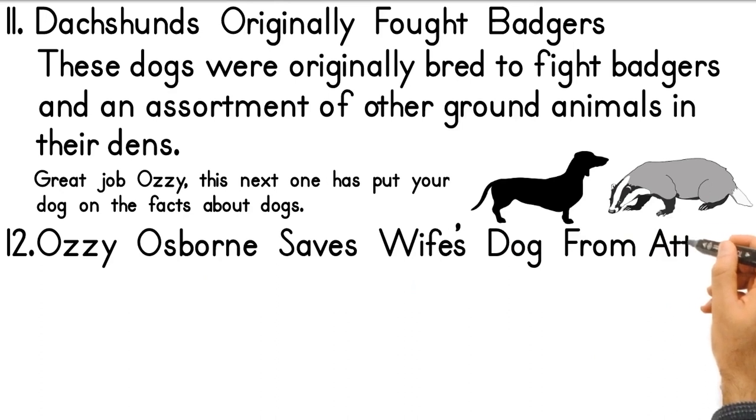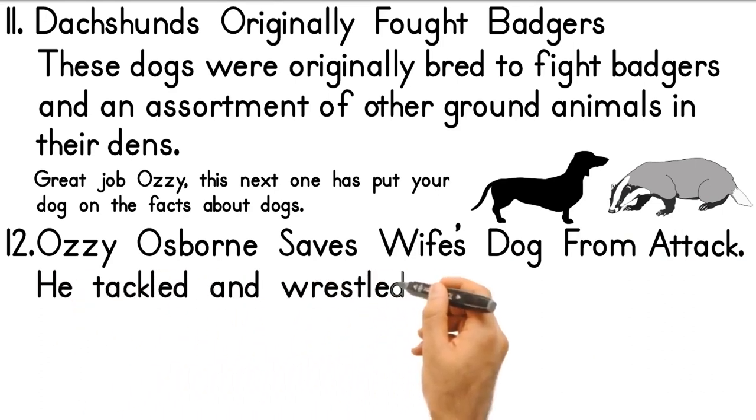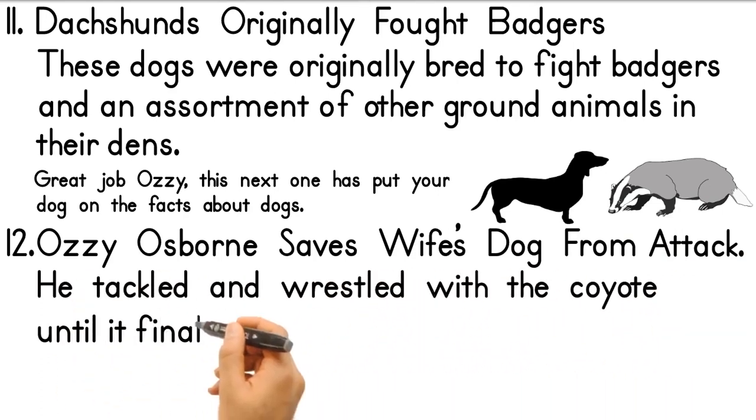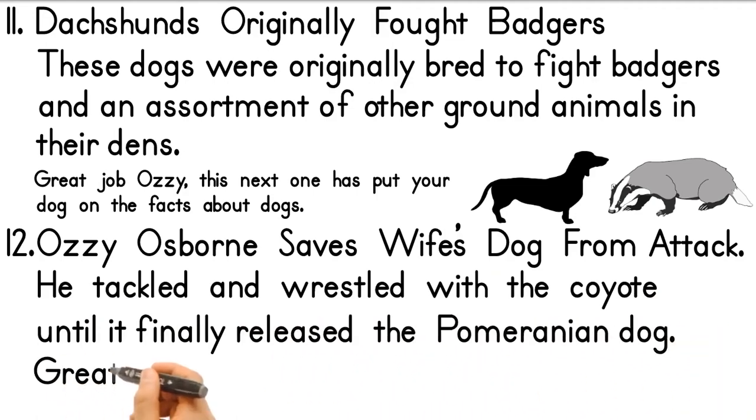12. Ozzy Osbourne Saves Wife's Dog from Attack. Quickly reacting is how Ozzy Osbourne saved his wife's dog from a coyote attack. He tackled and wrestled with the coyote until it finally released the Pomeranian dog.